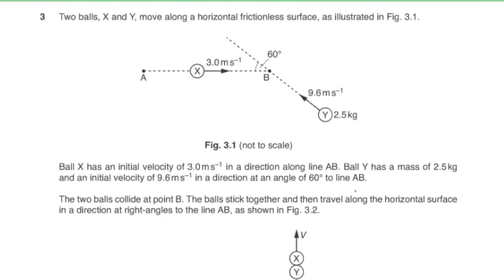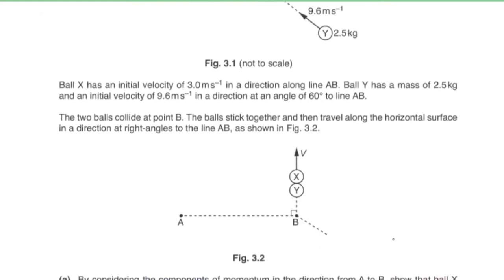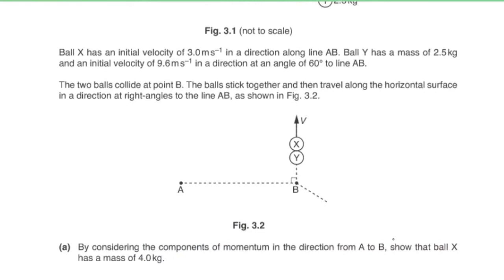Question three: two balls X and Y move along a horizontal frictionless surface. Ball X has an initial velocity of 3 m/s along line AB. Ball Y has a mass of 2.5 kg and velocity of 9.6 m/s at 60 degrees to line AB. The balls collide at point B, stick together, and travel at right angles to line AB.